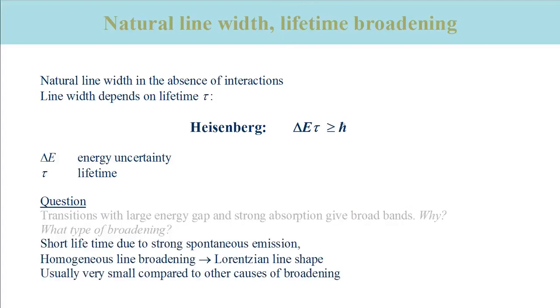To answer the first question, we consider the excited state that determines the line width. Its lifetime is determined by the diverse relaxation processes and we consider now only spontaneous emission as a relaxation path. We know that the probability for spontaneous emission is proportional to the probability of absorption and to nu to the power of 3, where nu is the frequency of the emitted photon, which is proportional to the energy gap between higher and lower state. High probability means short lifetime.